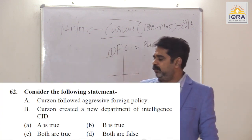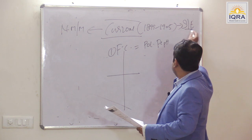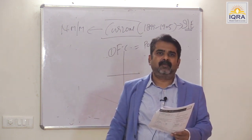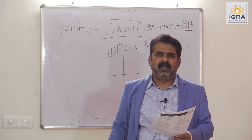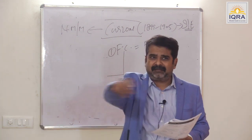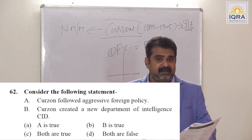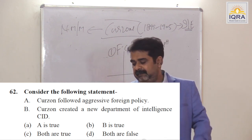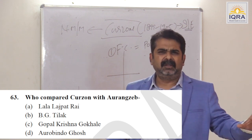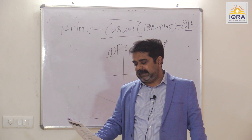Curzon followed aggressive foreign policy — true. Industrialized nations were expanding: France was active in Persia, Russians were active in Tibet. So he sent Douglas to Persia, brought the Shah of Persia to India, and sent Younghusband to Tibet. Curzon created a new intelligence department — CID. Answer is C. Who compared Curzon with Aurangzeb? Gokhale — because of the same attitude: centralization, reformation, etc. Answer is C.